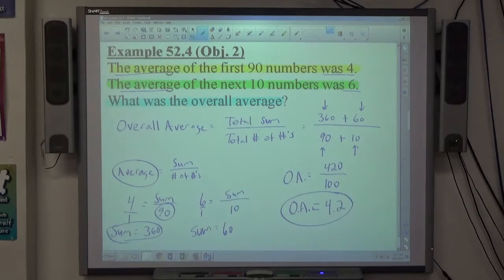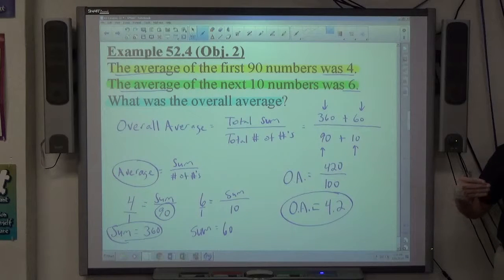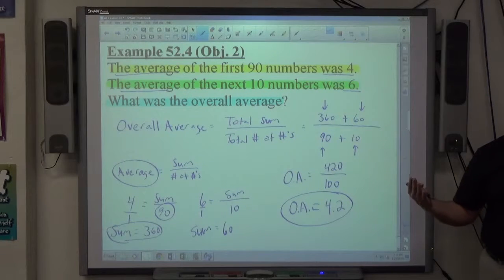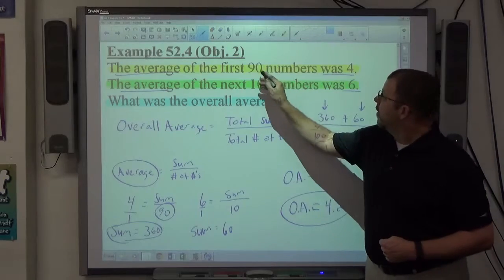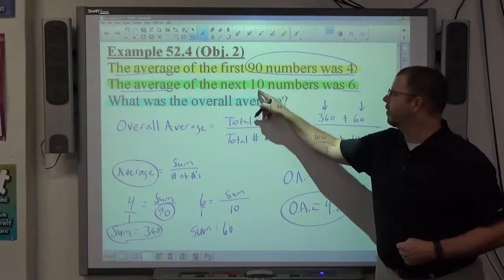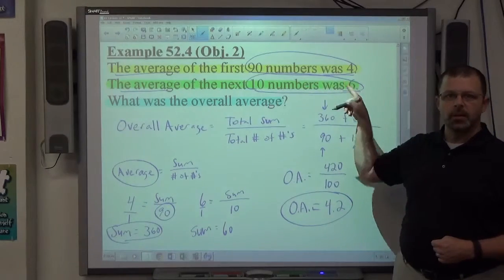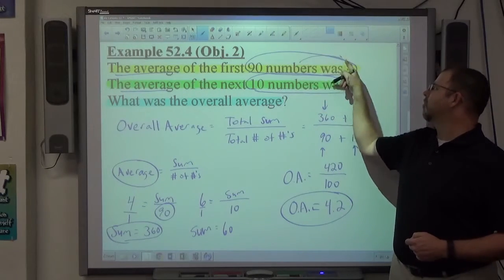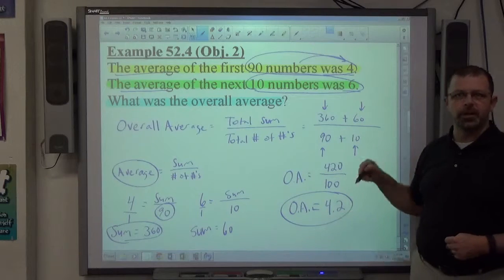Keep in mind, the overall average always skews towards the one that has more numbers going into it. So notice the average of 4, 90 numbers went into it. The average of 6, 10 numbers went into it. So more numbers went into the average of 4, and notice the answer is closer to 4 than it is to 6.